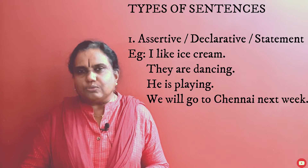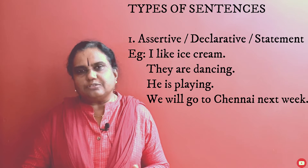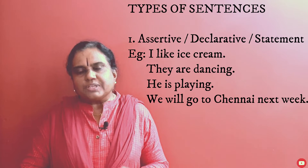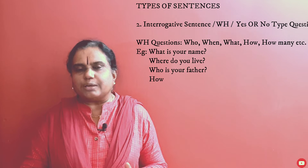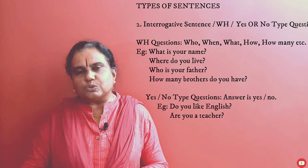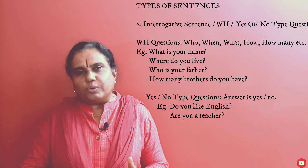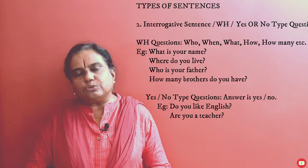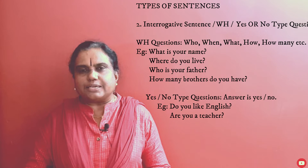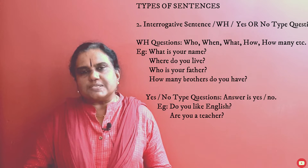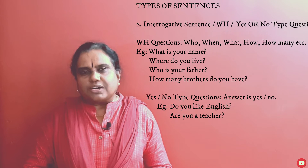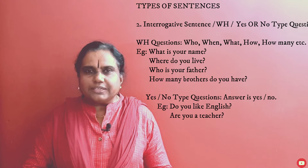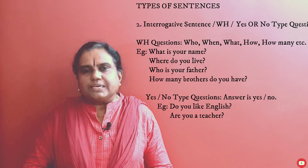Assertive or declarative statements: 'I like ice cream,' 'He is playing,' 'They are dancing,' 'We will go to Chennai next week.' Interrogative sentences include WH questions — who, when, what, how, how often — and yes/no type questions where the answer is yes or no. For example: 'What is your name?' 'Where do you live?' 'Who is your father?' 'How many brothers do you have?' And yes/no questions: 'Do you like English?' 'Are you a teacher?' — here the answer is yes or no.